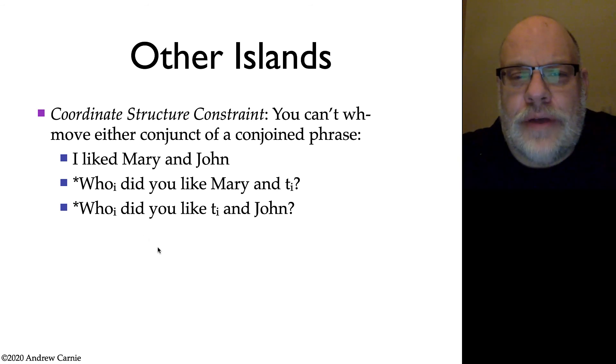Another constraint is the coordinate structure constraint. Now this one gets really quite complicated. But the intuition of it is that you can't WH move either conjunct of a conjoined phrase and you can't move out of either conjunct in a conjoined phrase. So take the sentence, I liked Mary and John. You can't question John. You can't say who did you like Mary and? Nor can you question Mary. Who did you like and John? So that's completely ungrammatical because we're trying to question one of the conjuncts and not the other.